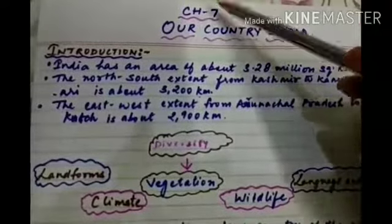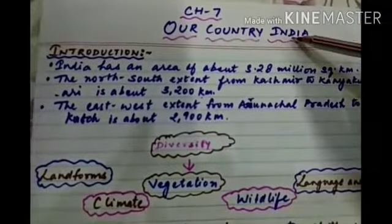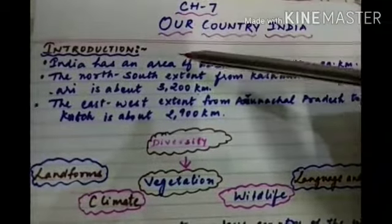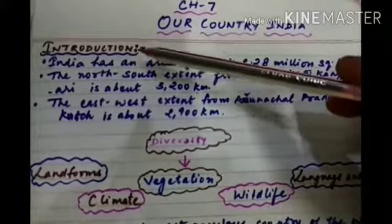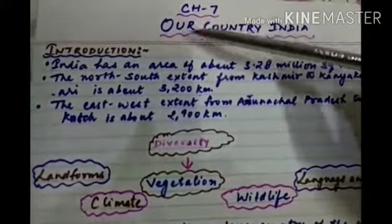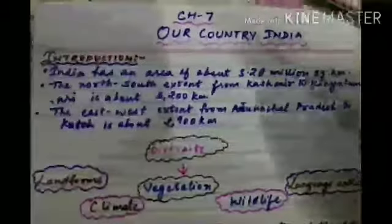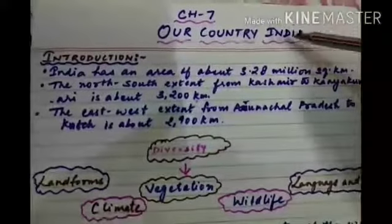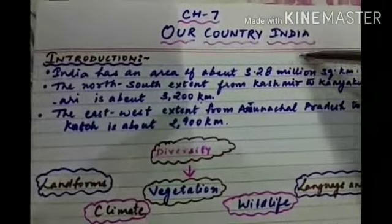This is Chapter Number 7: Our Country India. As we start our chapter with the introduction, you can see in this picture the blue line depicting from Jammu to Kanyakumari — 3200 km extent — and from Kach to Arunachal Pradesh it is 2900 km extent. Now as we live in India, today we are going to study about our country.